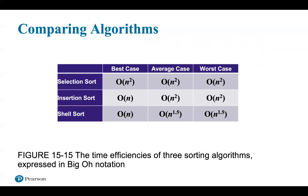To finish up, let's compare algorithms. Figure 15-15 summarizes the time efficiency of the three sorting algorithms presented in this chapter. Generally, the selection sort is the slowest algorithm. The shell sort, by capitalizing on the best-case behavior of the insertion sort, is the fastest. That will end our lecture — thank you very much.